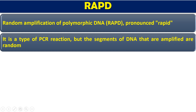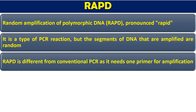It is a test which is normally based on PCR reactions, but the segments of DNA that are amplified are random. In normal PCR, we take a primer for a specific target DNA which is complementary to the target DNA, and then that target DNA is amplified. But in the case of RAPD, it is a random oligonucleotide, so it randomly binds at a random place, and that random DNA is going to be amplified. We will see the details during the process as well.